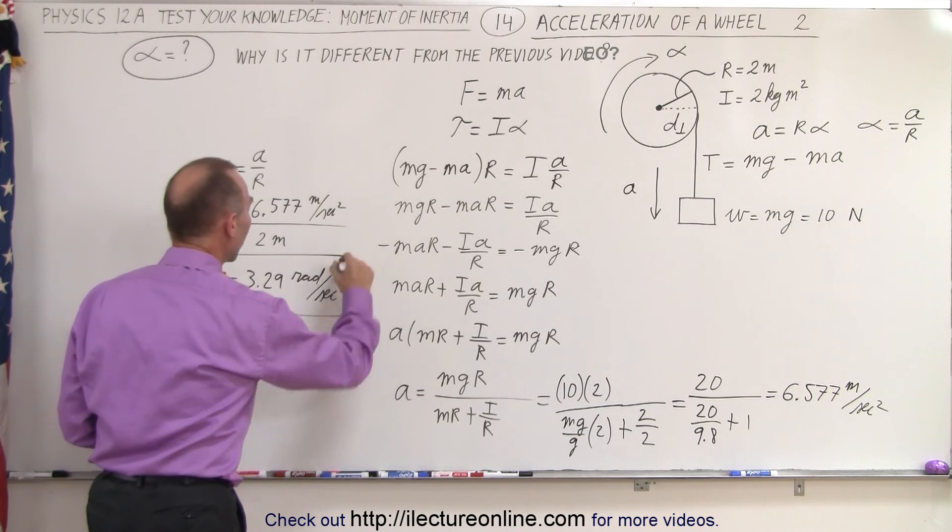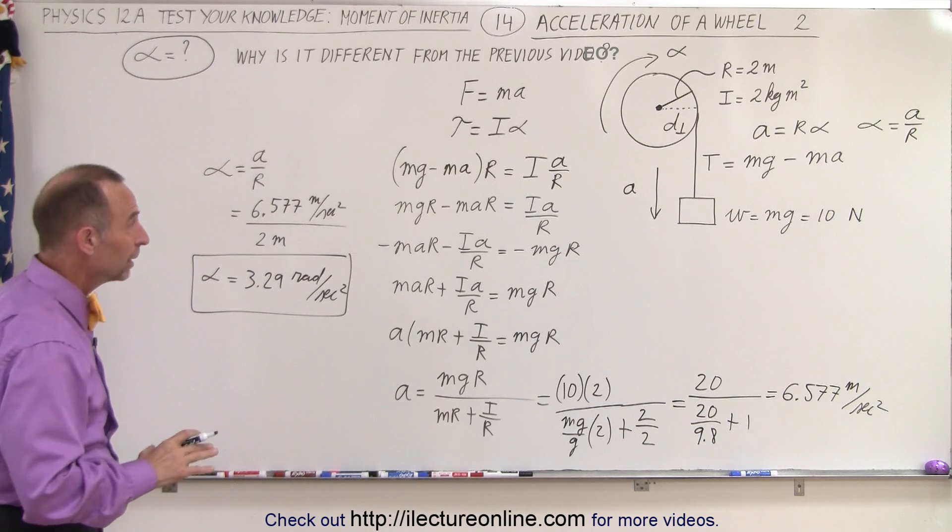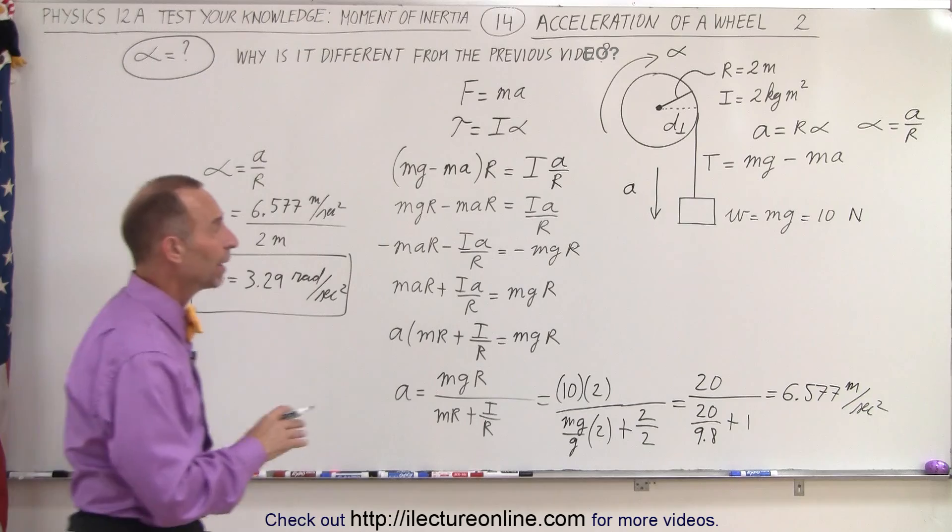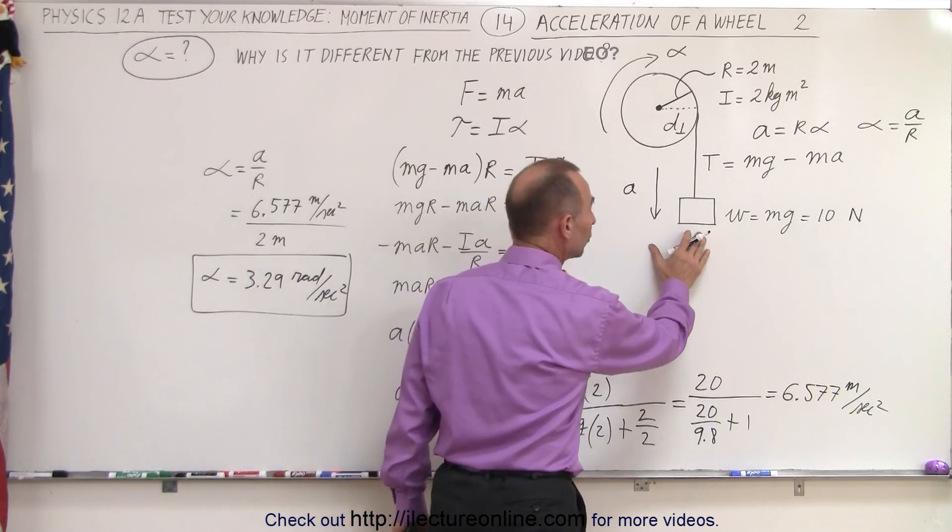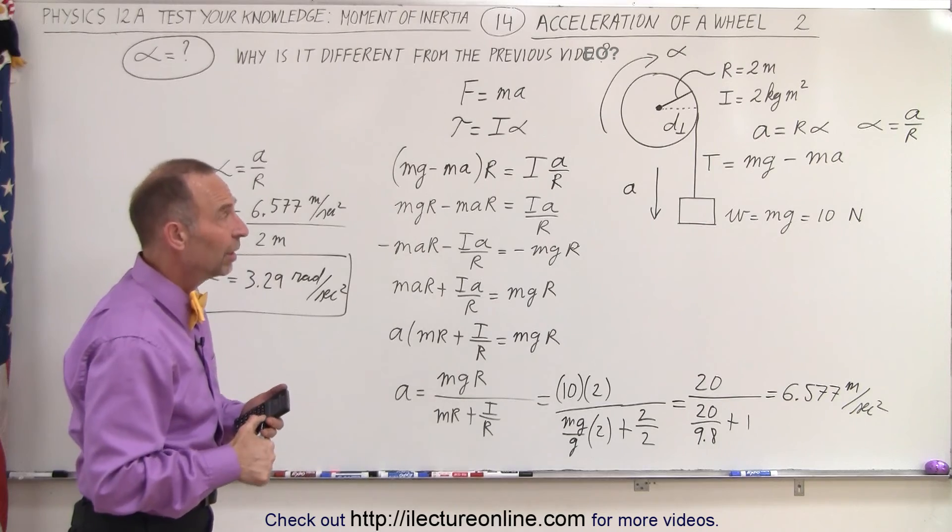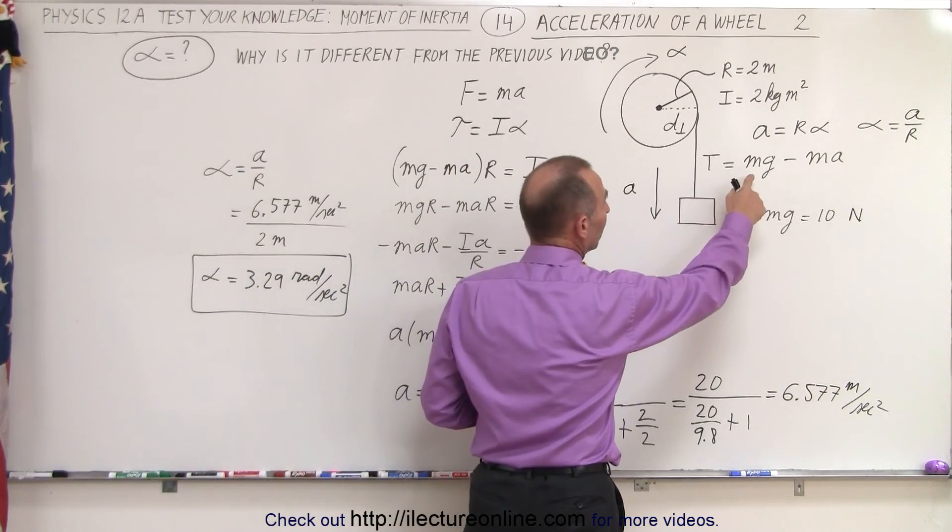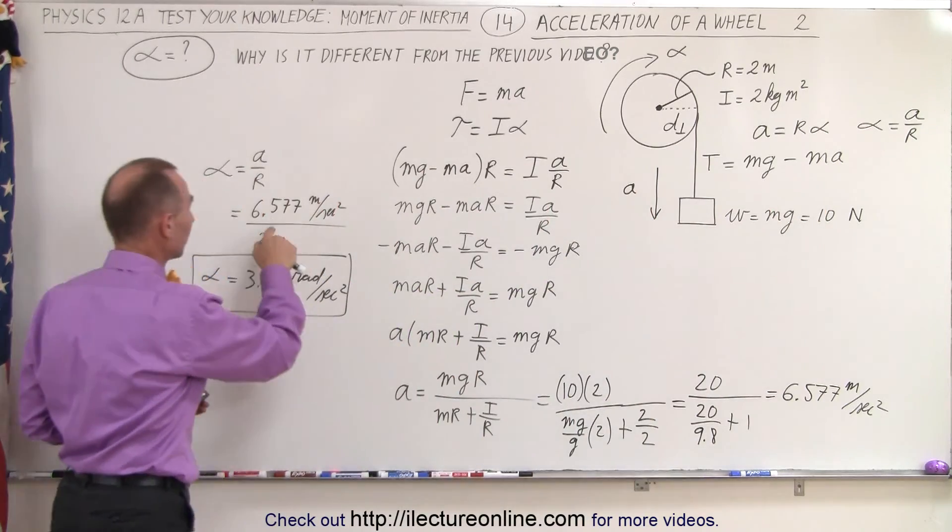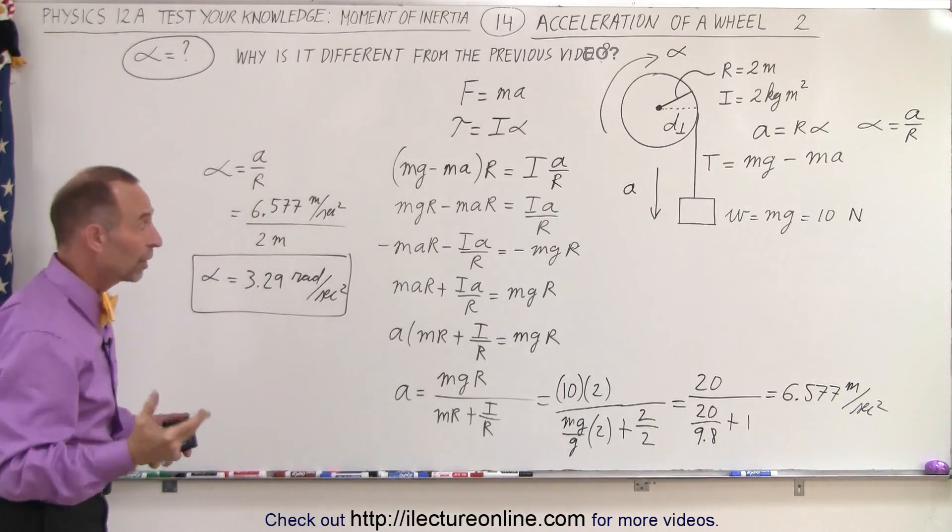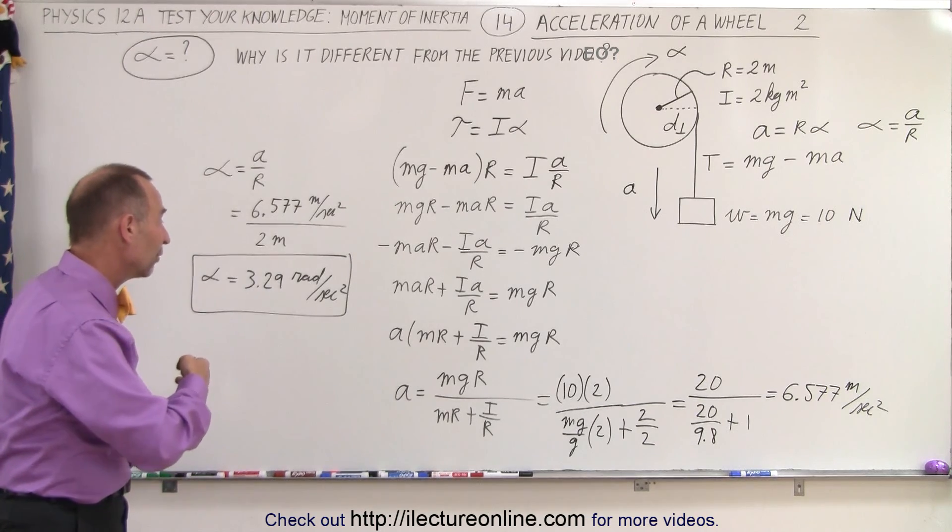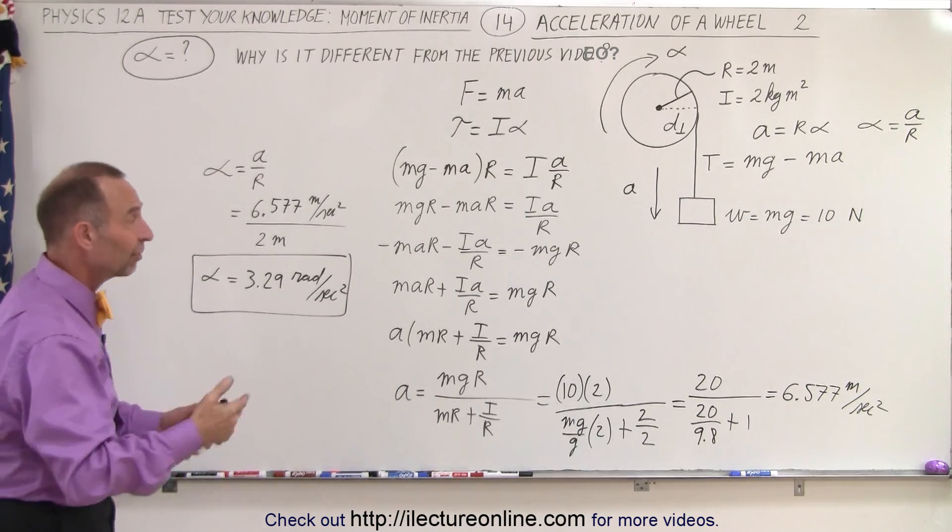This is only about one-third the angular acceleration that we found in the problem on the previous video by applying a force of 10 newtons. There's a huge difference between the two. But essentially, notice that the tension is Mg minus MA, and since A is a significant number—about two-thirds acceleration due to gravity—that means that the angular acceleration would therefore be only about one-third.